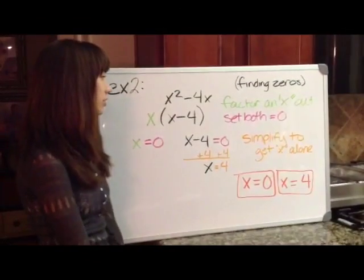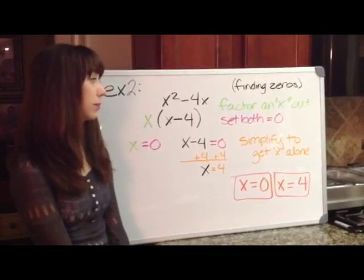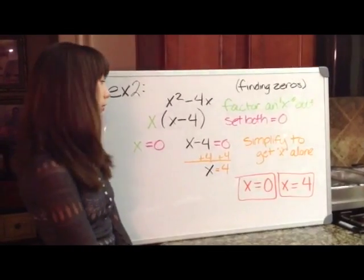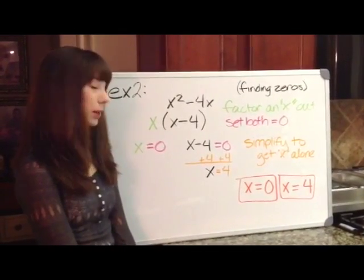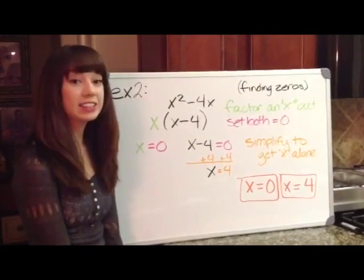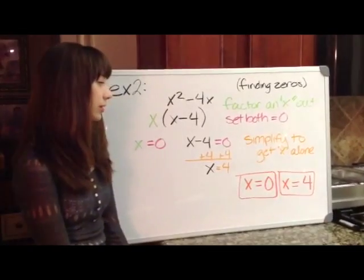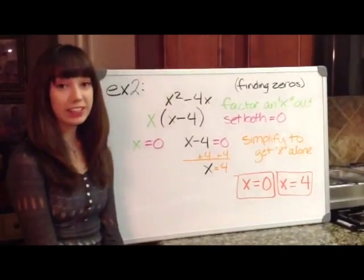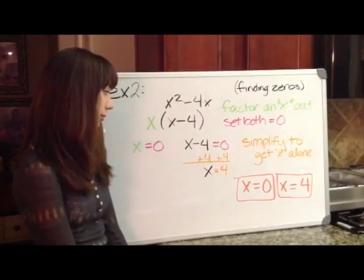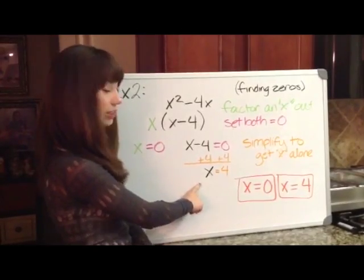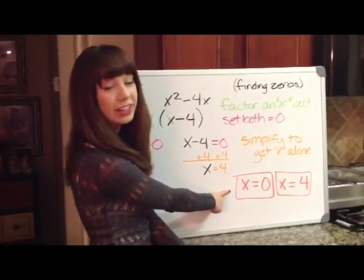Example number 2, we have x squared minus 4x. Our first step is to factor out an x from both terms. So we get x multiplied by x minus 4. Our next step is to set them equal to zero. So we get x equals zero and x minus 4 equals zero. Next we have to simplify to get x alone so we add 4 to both sides and we get x equals 4. So our answers are x equals zero and x equals 4.